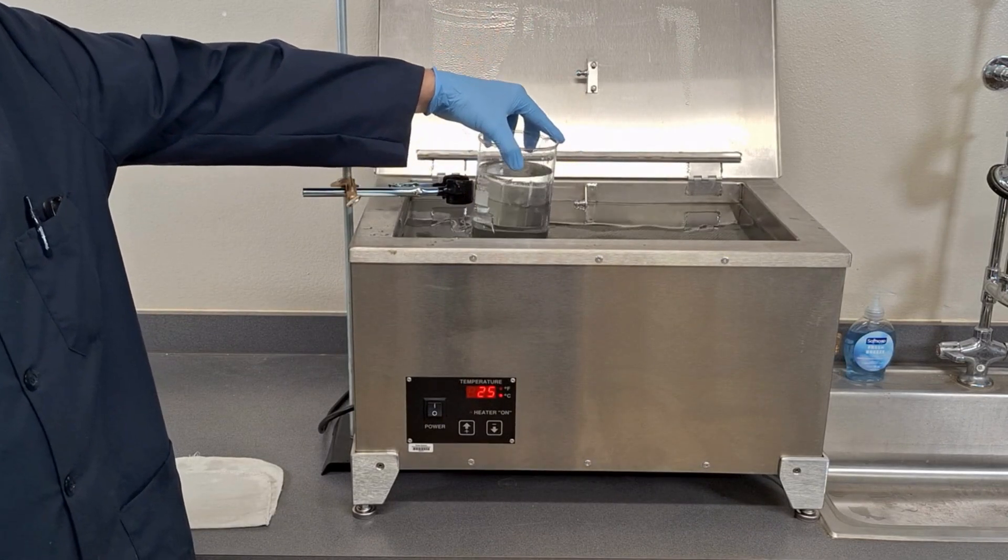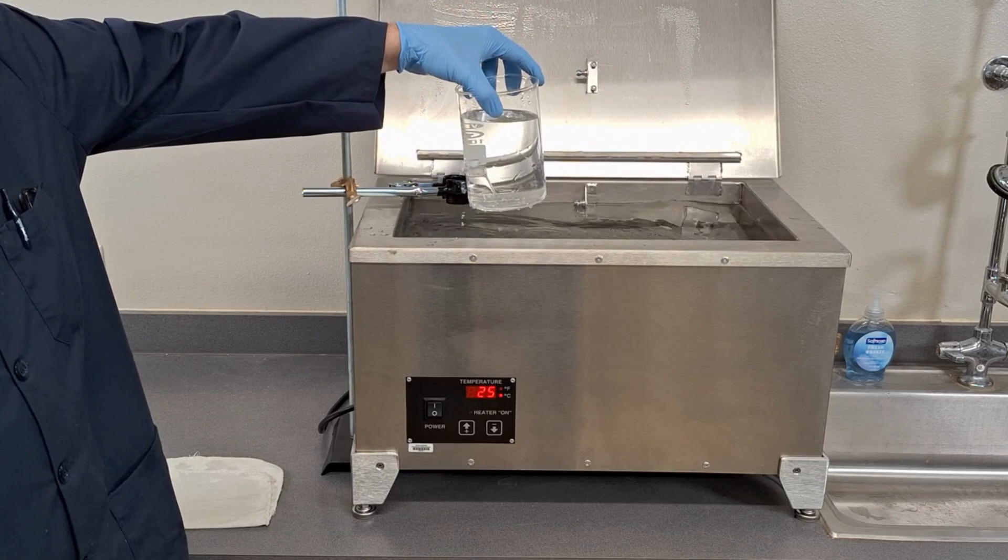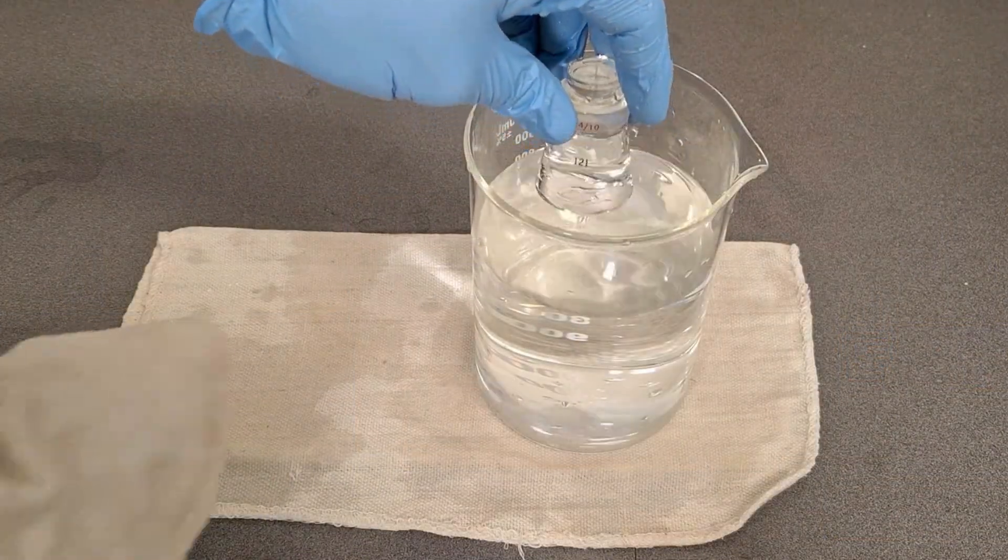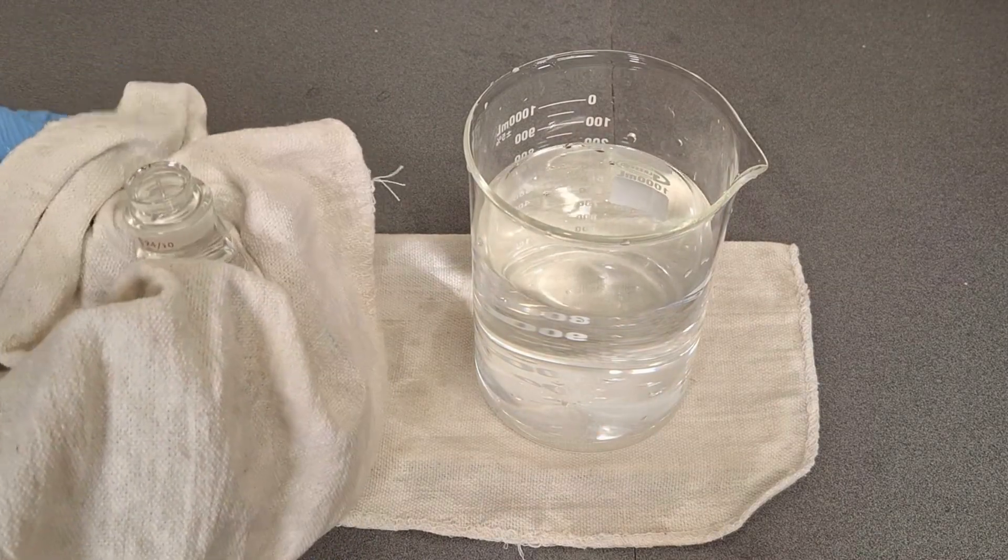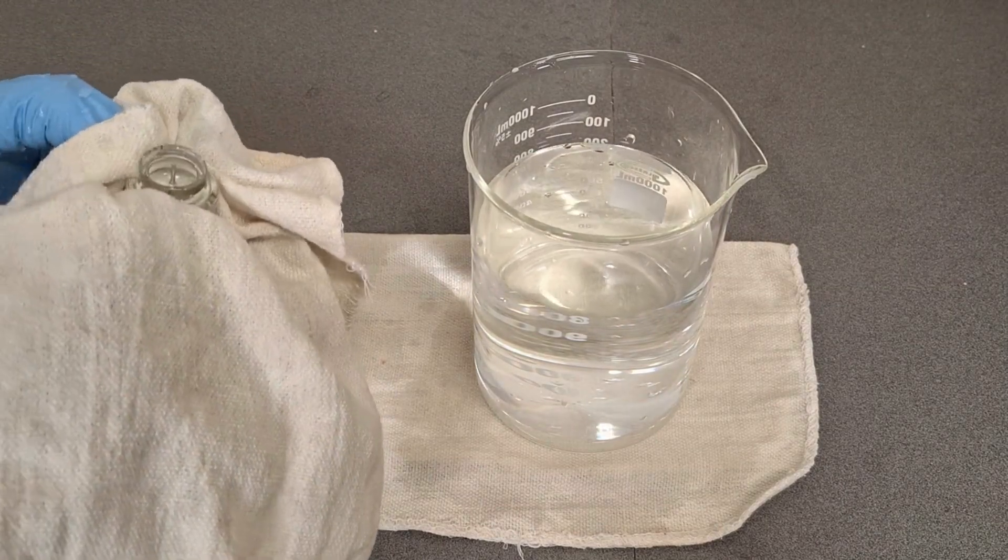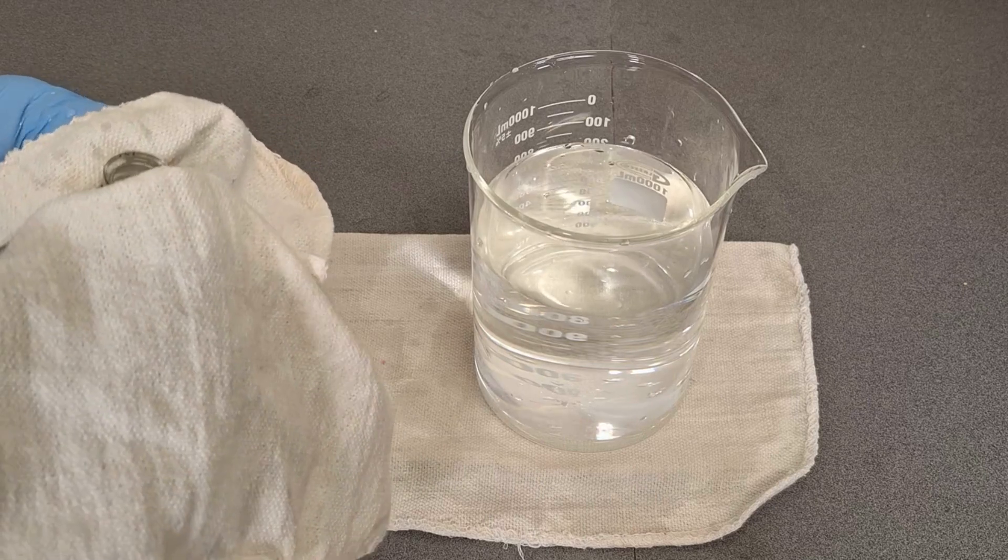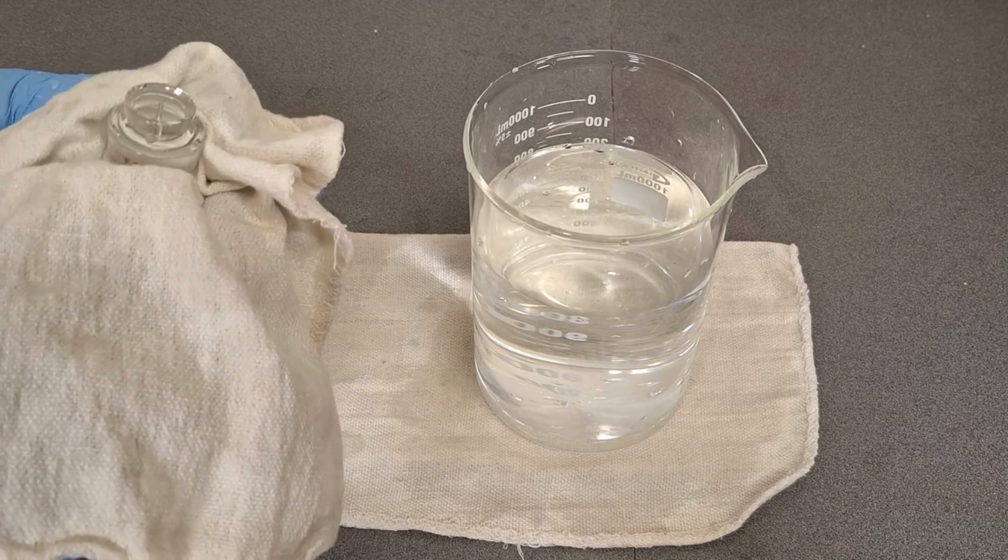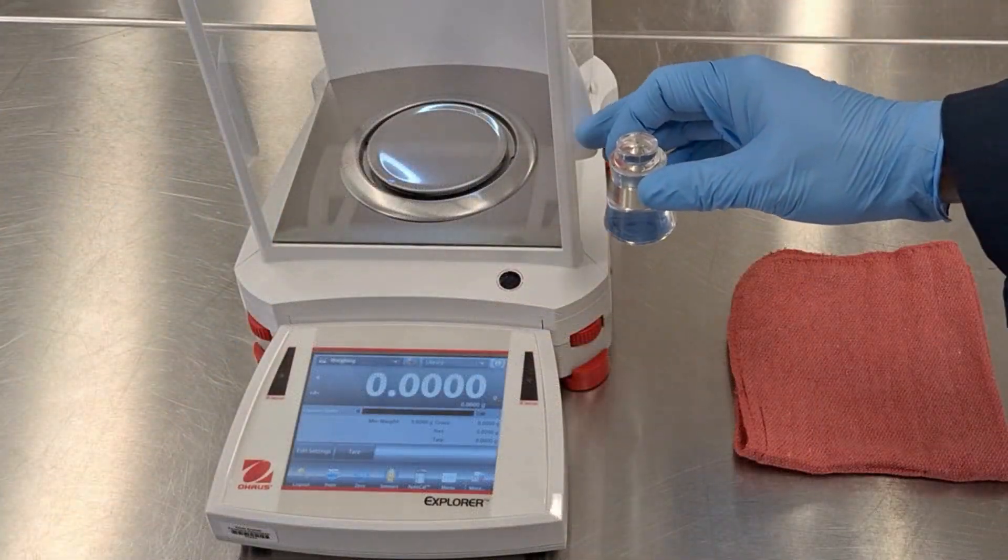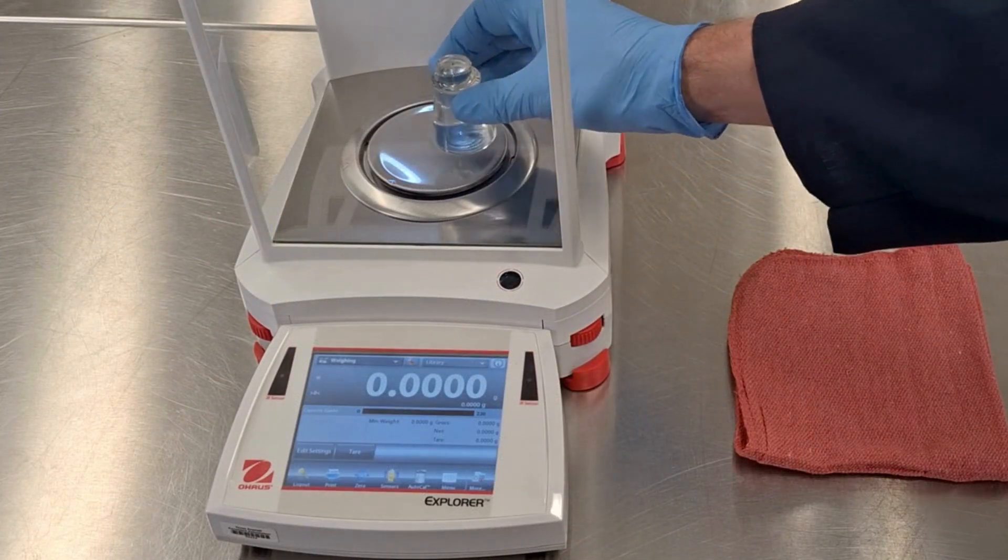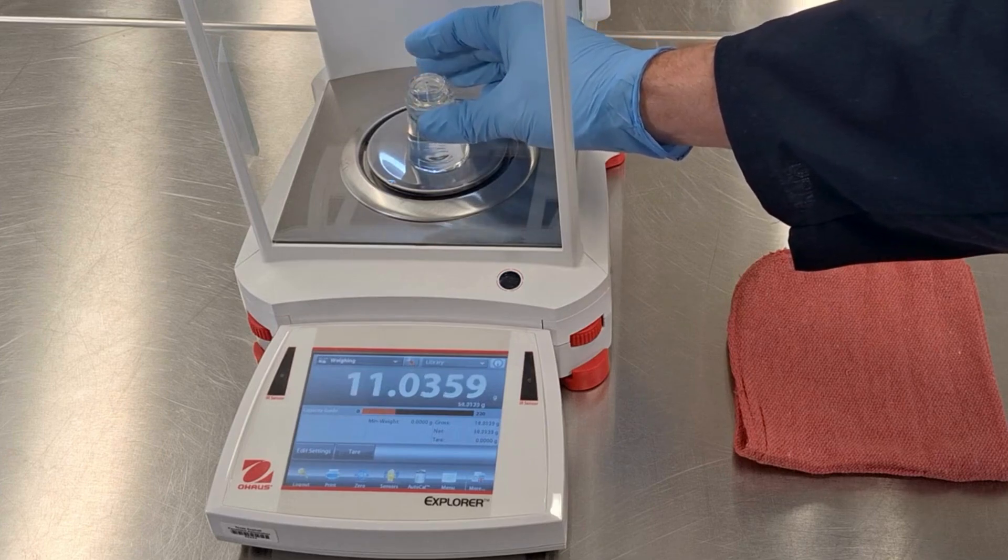After 30 minutes, remove the pycnometer from the water bath. Promptly dry the stopper with a single swipe of a dry towel and quickly dry the rest of the outside of the pycnometer. Weigh the pycnometer to the nearest 0.001 gram and record this weight.